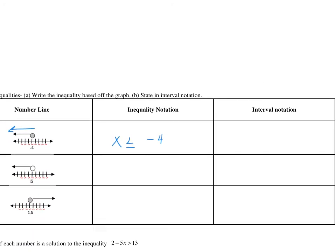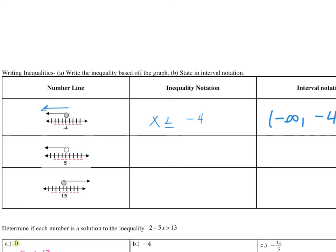With interval notation, we're doing negative infinity. So we're going from negative infinity all the way to negative 4, and that's going to have a bracket because of the closed circle. Now, the next example goes to the left with an open circle, so we're going to say x is less than 5. Since we're including all values of x that are smaller than 5, we're going to do negative infinity to 5. It's a parenthesis because we are not including 5 in our solution — basically all numbers smaller than 5 are in our solution.